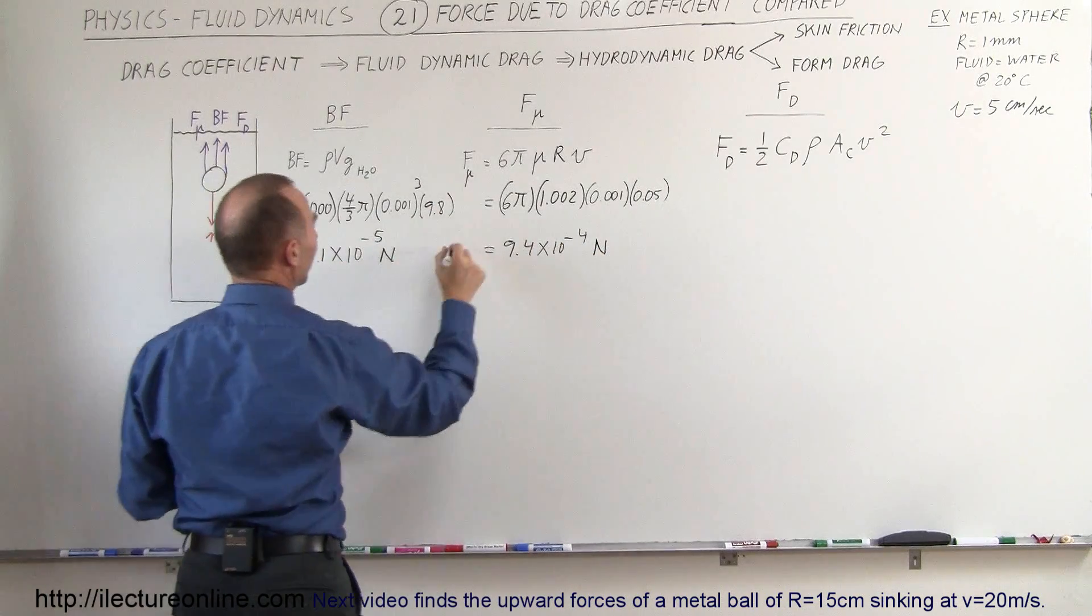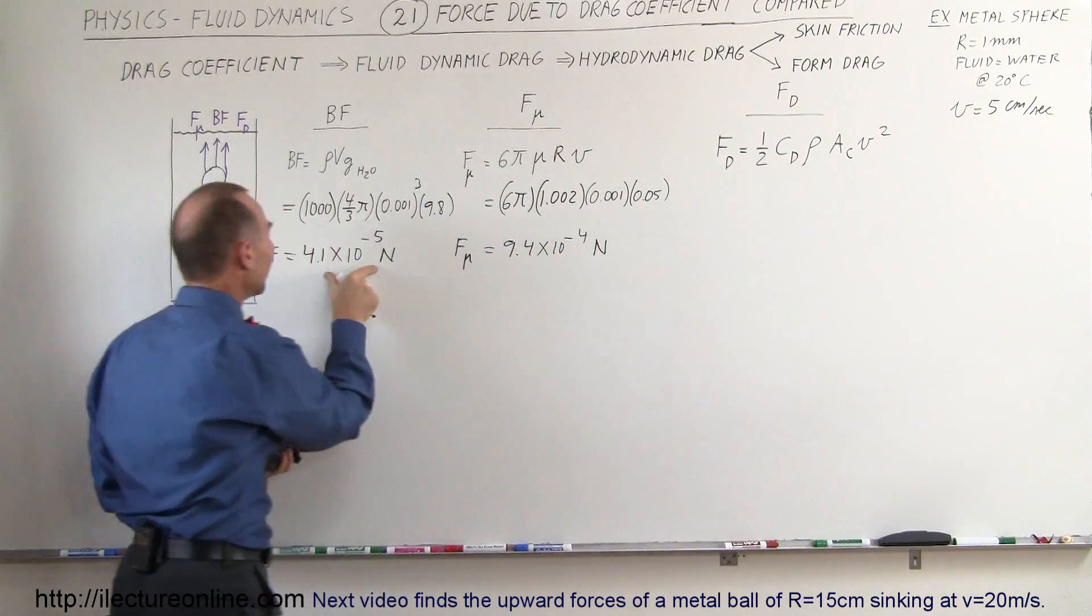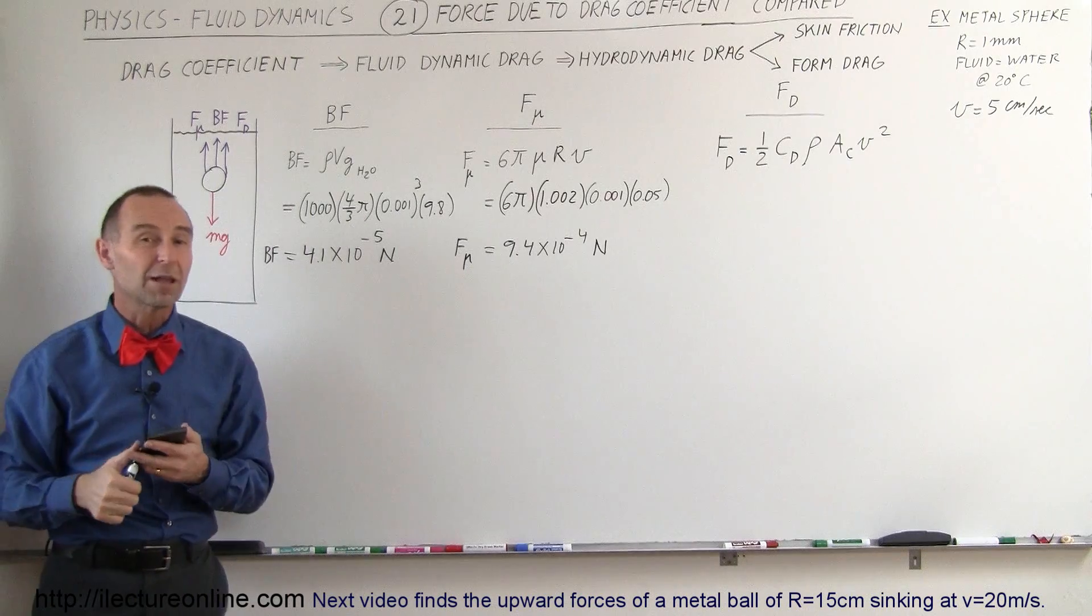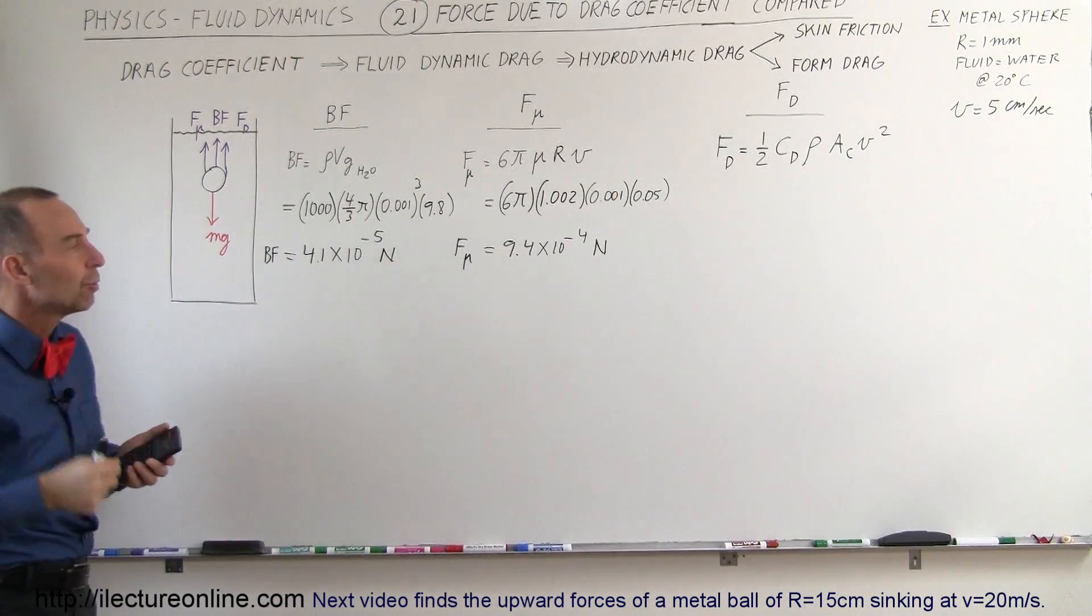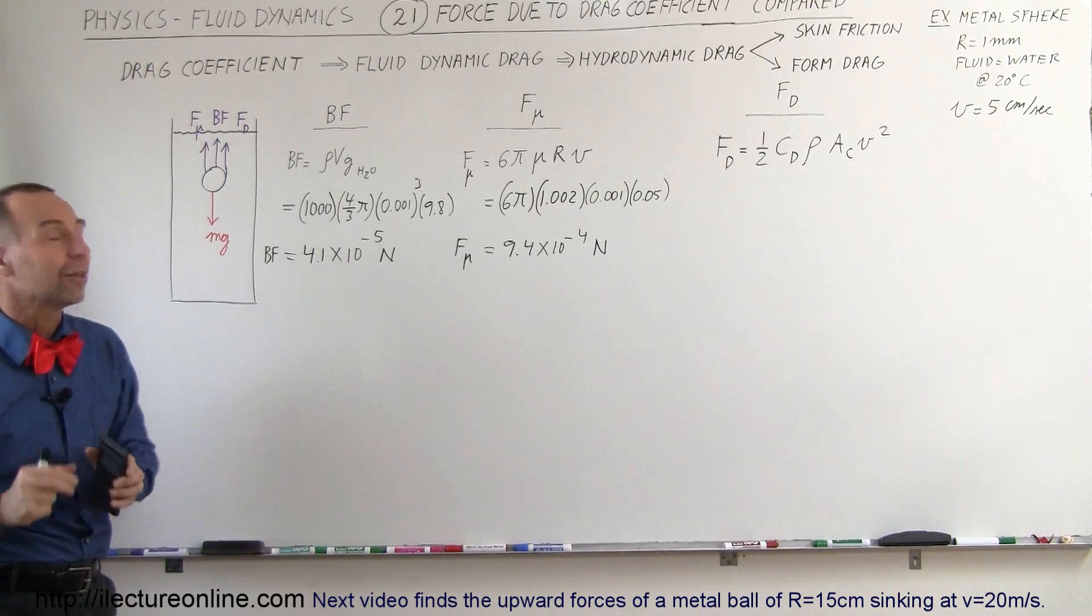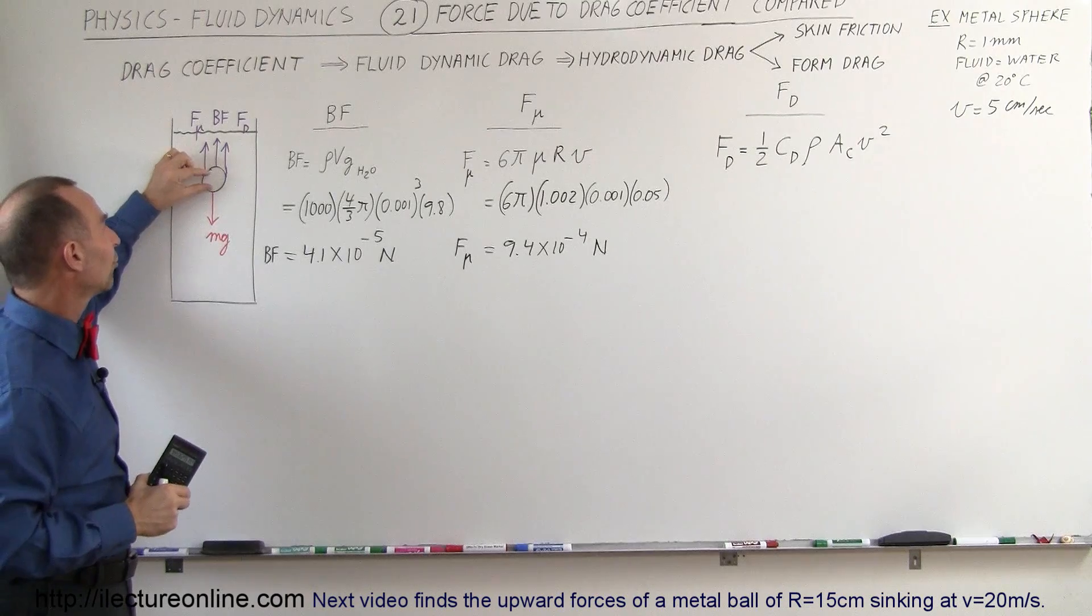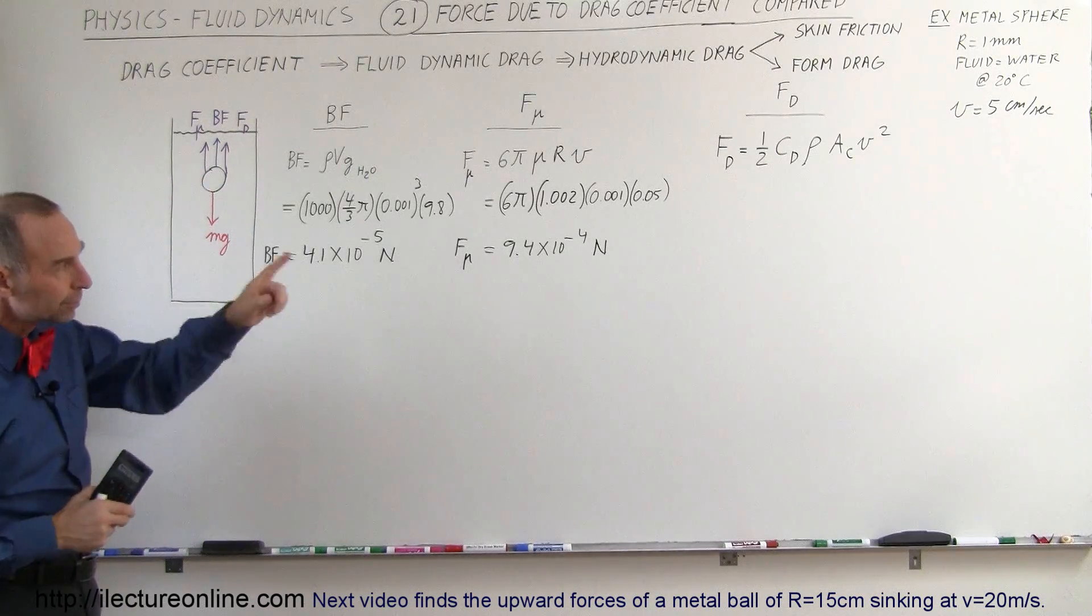This is the buoyancy force, this is the force caused by the viscosity of the liquid. Notice that this is a much bigger force than the buoyancy force. So for very small objects, it's not so much the buoyancy force that holds down the velocity of the object moving through the fluid, it's really the viscosity of the fluid. That's why very small spheres will tend to move very slowly in a viscous liquid.